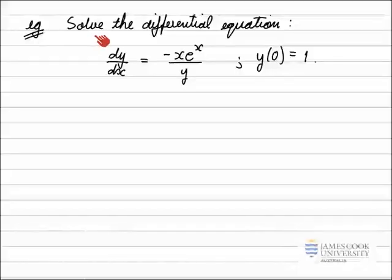In this example, we've been asked to solve the differential equation dy/dx equals negative x e to the x over y, and we have a condition on the side here, y of 0 equals 1. So that means when x equals 0, y is equal to 1, and that will help us solve for an arbitrary constant that we get in our general solution to the DE.